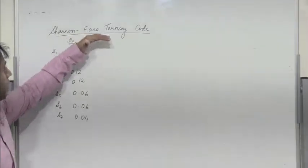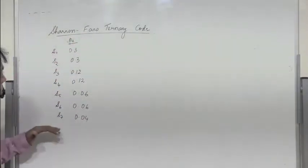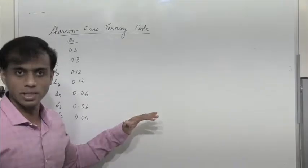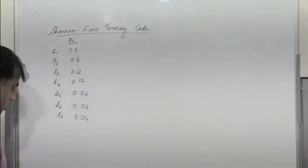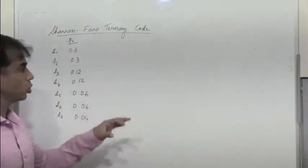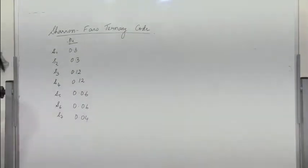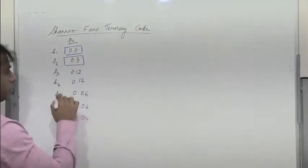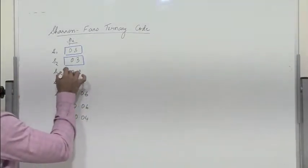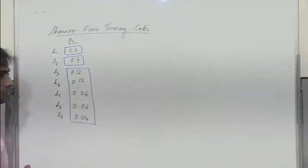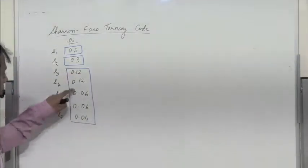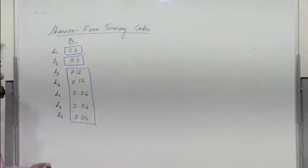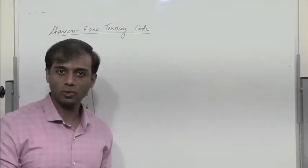For Shannon-Fano ternary code, we need to divide all the probabilities into three nearly equal probability groups. So I have seven symbols, to be divided into three groups where each group's probabilities are nearly equal. So 0.3 is grouped into one group, S2 with probability 0.3 forms another group, and all the remaining four symbols (S3 to S7) form the third group — summing to 0.4. So I have divided all probabilities into three nearly equal groups.